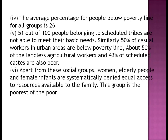About 51 out of 100 people belonging to Scheduled Tribes are not able to meet their basic needs. Similarly, 50% of casual labor workers in urban areas are below the poverty line. About 50% of landless agricultural workers and 43% of Scheduled Castes are also poor. Apart from social groups, women, elderly people, and female infants are systematically denied equal access to resources — this group is called the poorest of the poor.